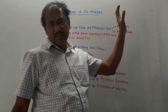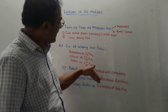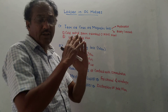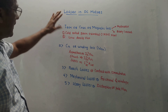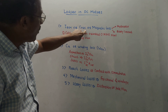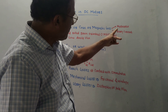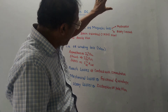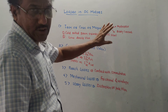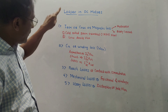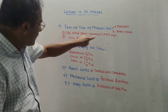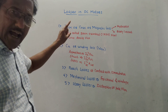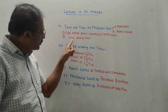Next part is losses in DC motors. First loss is iron or core or magnetic loss — remember two words: it is due to hysteresis loss and eddy current loss. These losses are fixed losses. To minimize these losses: use CRGO (cold rolled grain oriented) steel material, and use low density flux.